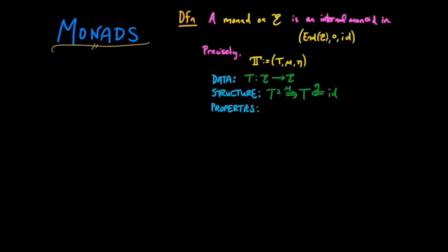The associativity law just states that starting with T cubed, we can either apply the multiplication mu on the left first, and then multiplication again, or we can take multiplication on the right first, and then multiplication again, and the resulting composition of those two morphisms are equal. In other words, the square commutes.